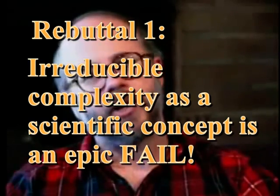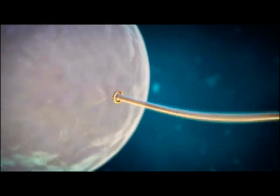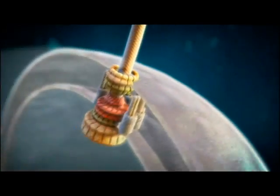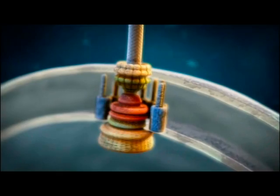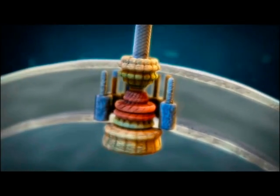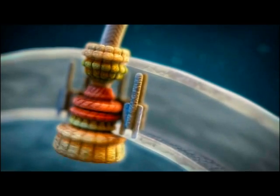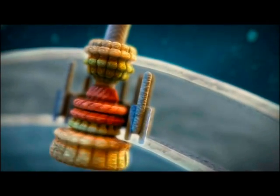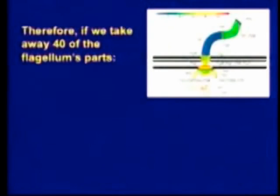The bacterial flagellum has generally been accepted as the principal representation of irreducible complexity. However, it has been easily demonstrated that components of the bacterial flagellum motor are used elsewhere in nature for other functions, and the components of it are modified from earlier bacteria. So, if we start with the flagellum — here it is — and these drawings name the genes and the proteins in the flagellum.